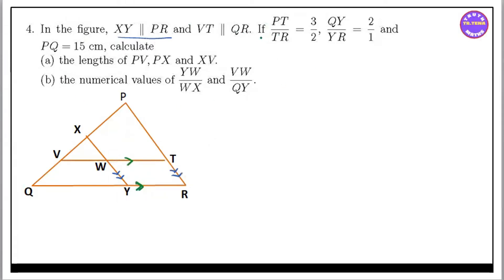If you are looking at PT by TR, QY by YR, then you will have lines to fill out of the figure. Let us see this — the class is called PT equals 3.